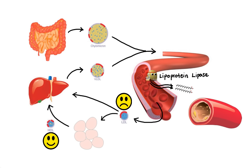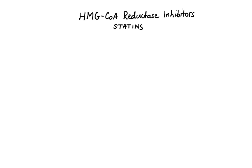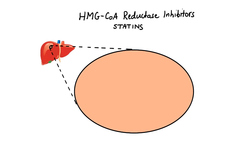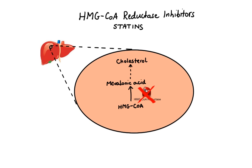There are several major classes of lipid-lowering drugs. First, we have HMG-CoA reductase inhibitors, commonly known as statins. In order to better understand how these agents work, we need to take a closer look at the liver cell. This is where the HMG-CoA reductase enzyme converts HMG-CoA into mevalonic acid, which is a cholesterol precursor. This is a rate-limiting step, so by inhibiting this enzyme, statins effectively reduce the concentration of cholesterol within the liver cell.